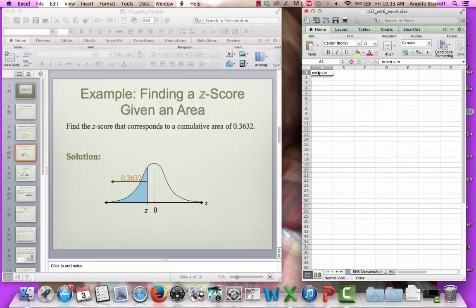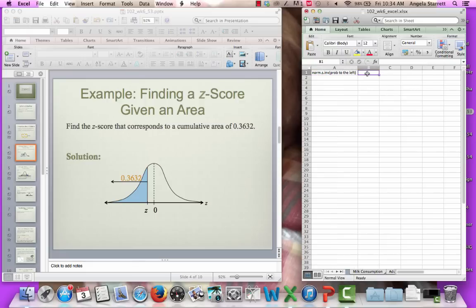So we're going to use norm.s.inv, so INV meaning inverse, so we're going backwards. Our inputs for this function are just a probability. I'm going to specify here it's a probability to the left. Sometimes we're going to have to do math to get the area to the left. So I'm going to say equals norm.s.inv. You can see all I'm asked for is the probability. So I type 0.3632, and I get my z-score of negative 0.35.